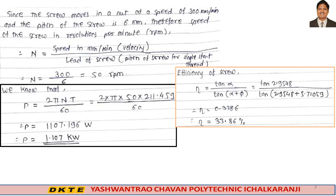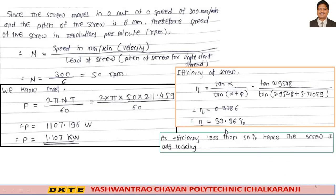Next, the efficiency of this screw: efficiency formula is tan alpha divided by tan(alpha + phi). Putting the values of alpha and phi, efficiency equals 33.86%. This efficiency is less than 50%, hence the screw is self-locking. When efficiency is less than 50%, the screw is self-locking; when it is above 50%, it is an overhauling screw.